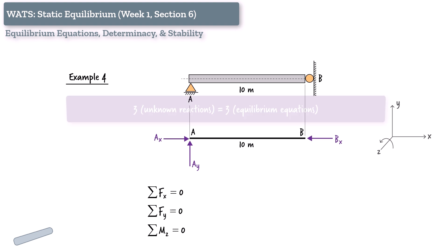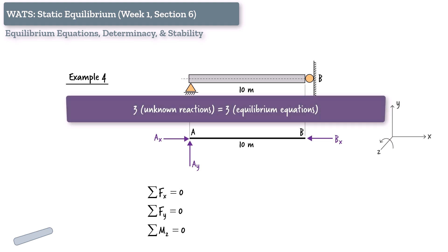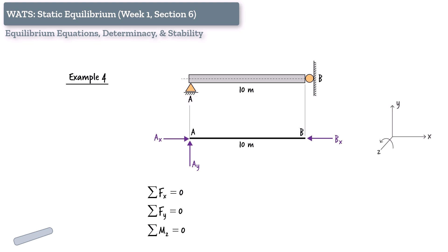That gives us a total of three unknown reactions, and we still have three equilibrium equations. So the count checks out. Three equations, three unknowns. But watch what happens when we apply a vertical load of 10 kN, located 5 meters away from point A. We can now write the equilibrium equations.